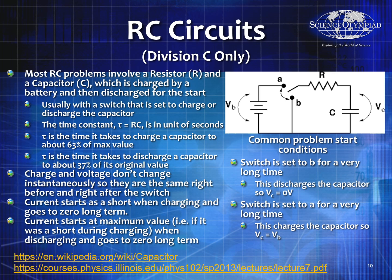Usually a switch allows the capacitor to either charge or discharge. There will be a time constant, tau, equal to RC — where R is in ohms and C is in farads. It takes about one tau to charge a capacitor to about 63% of its maximum value. Tau is also the time it takes for a capacitor to lose about 37% of its original value.